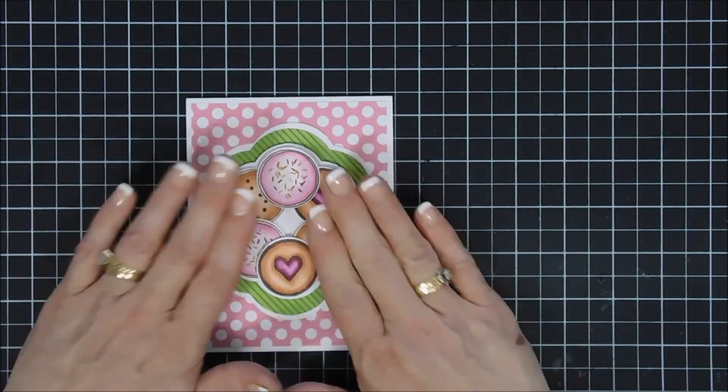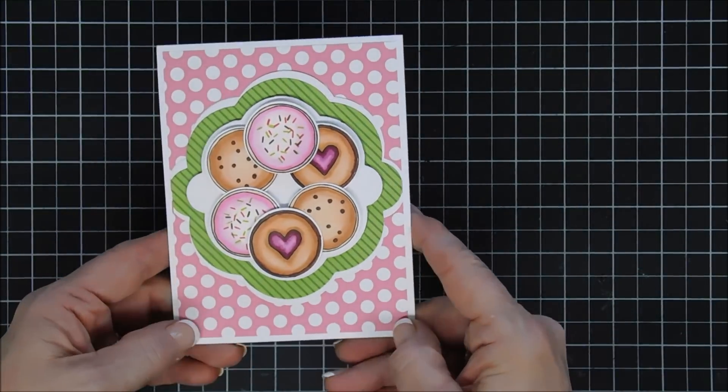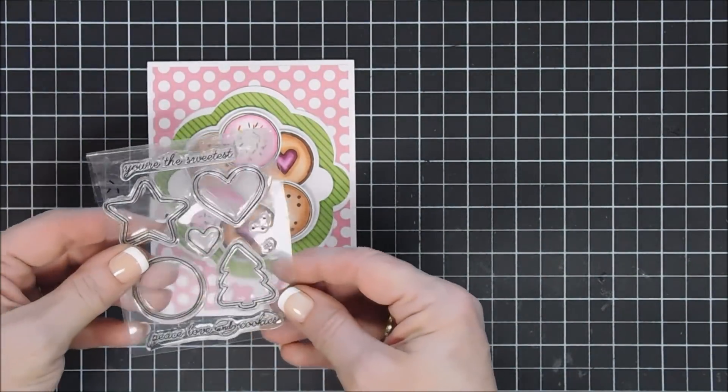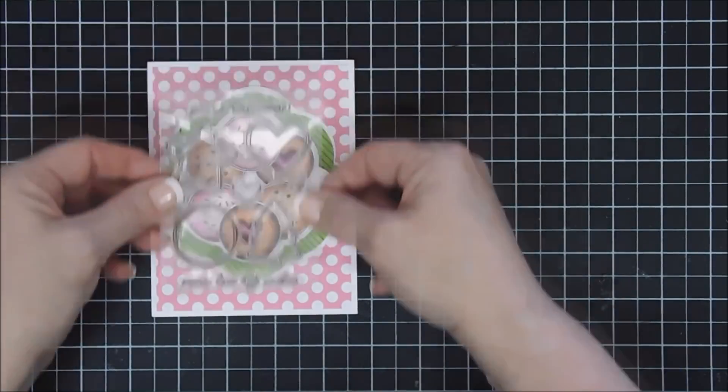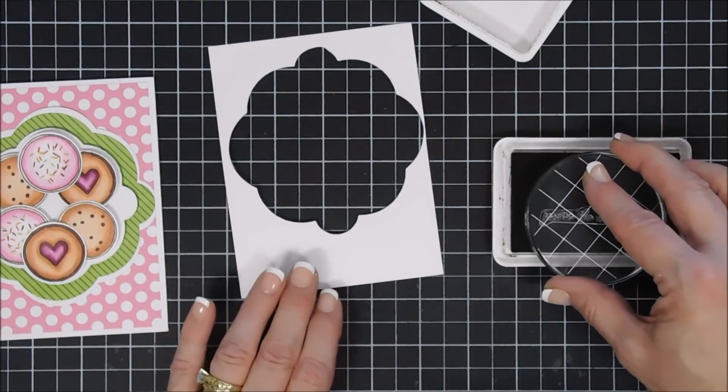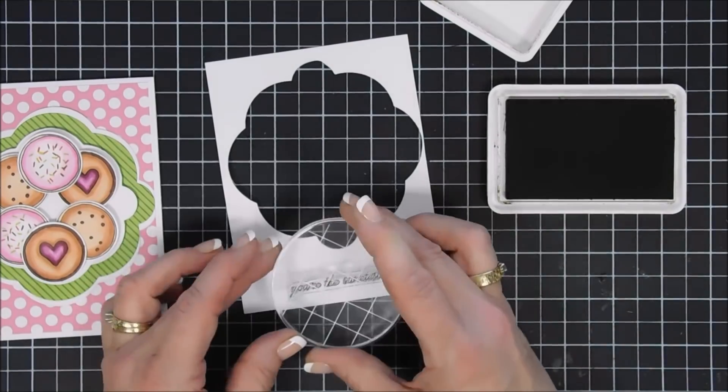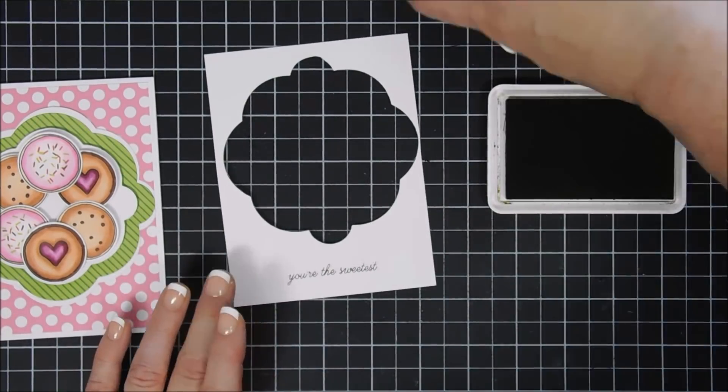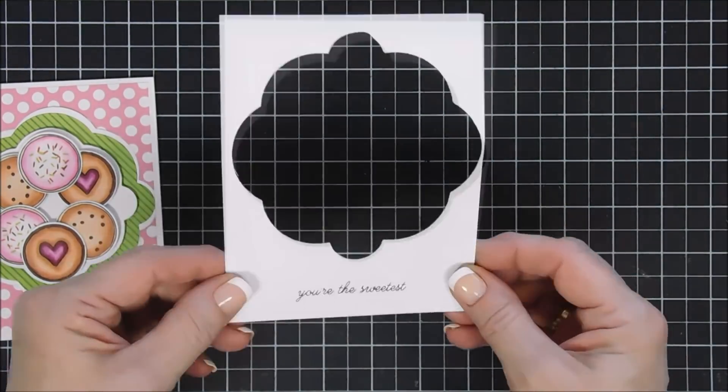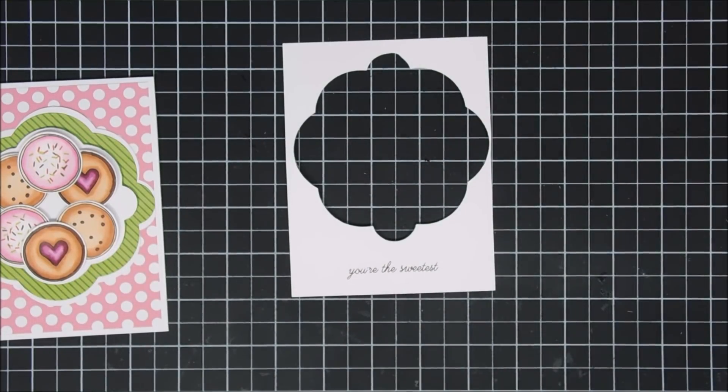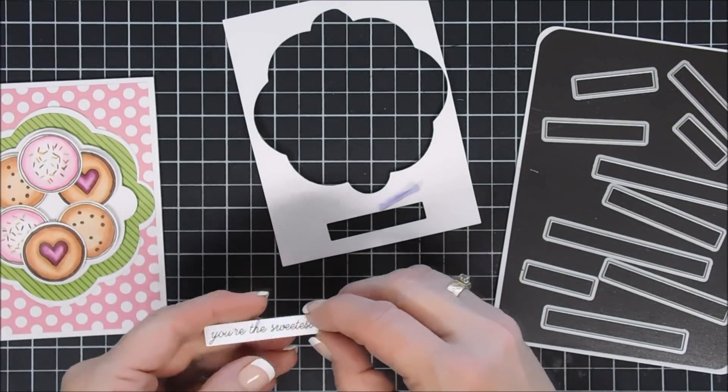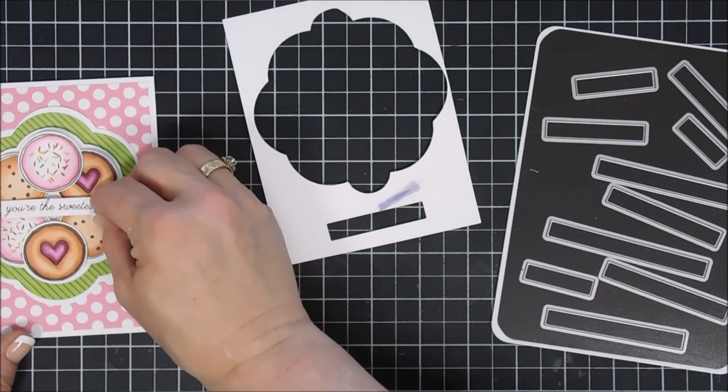And then for my sentiment, we're going to stamp the sentiment. There's two sentiments in the stamp set. One says 'you're the sweetest,' and then the other one says 'peace, love, and cookies.' So I chose 'you're the sweetest.' We're going to make it a just because card. And again, I'm using the Milk Chocolate ink to stamp that. Then I'm going to take some of my sentiment die and die cut out a little sentiment here.